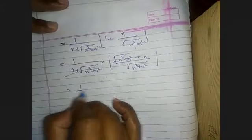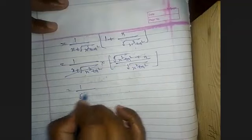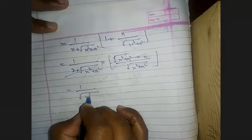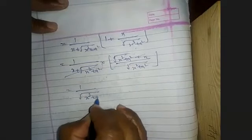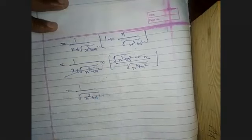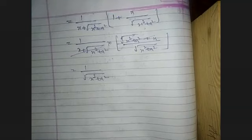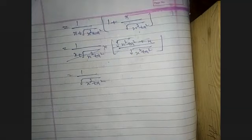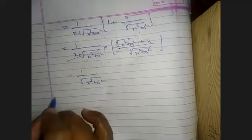The like terms (x + √(x² + a²)) cancel, so the answer is 1 upon √(x² + a²). Therefore dy/dx = 1/√(x² + a²).